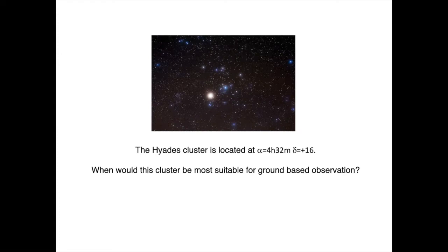As an example, the Hyades cluster is located at right ascension 4 hours and 32 minutes and declination 16 degrees. A skilled astronomer knows from these numbers where in the sky the cluster is, what is the best time of the night to observe it, and what period of the year it's going to be most visible.